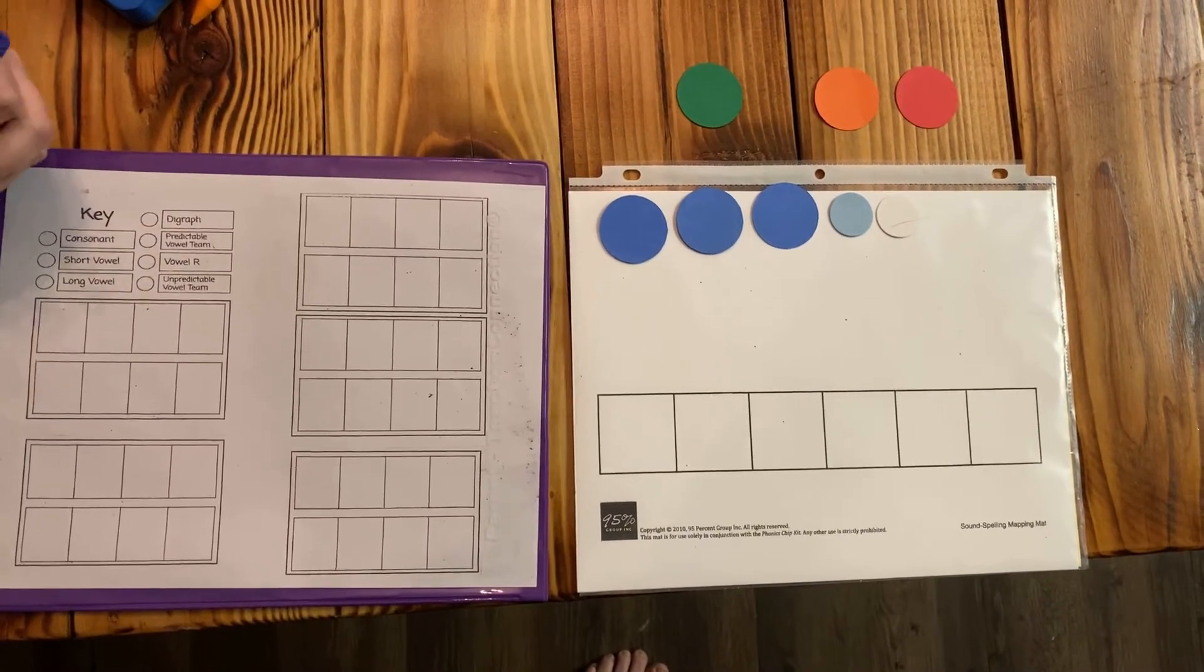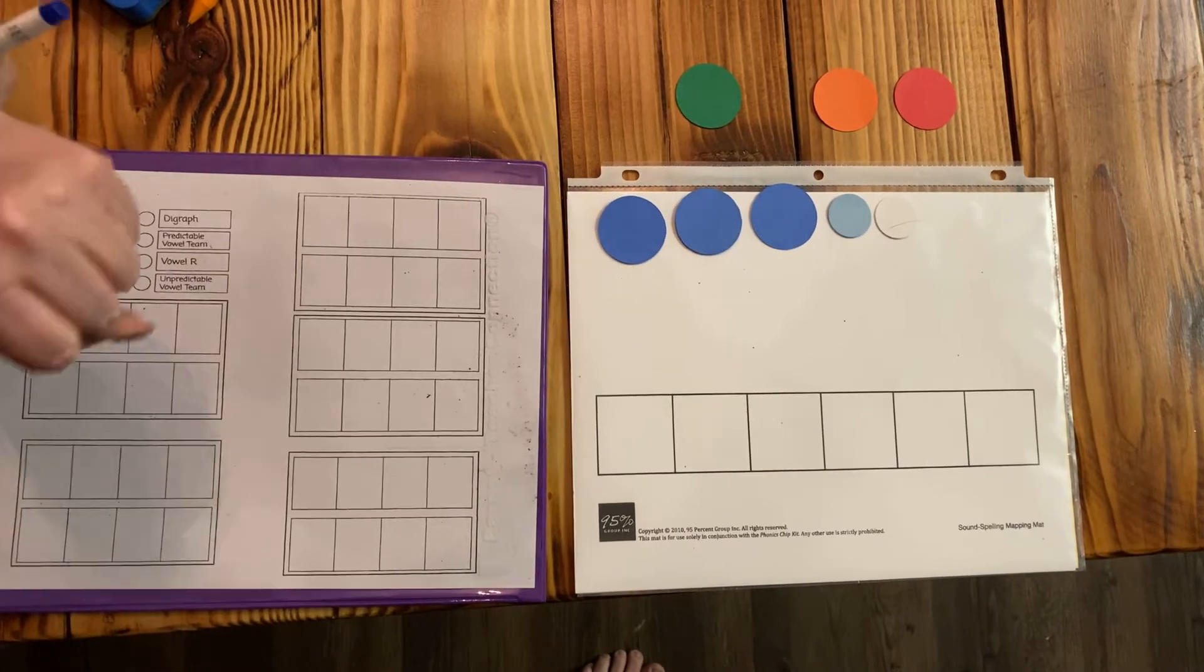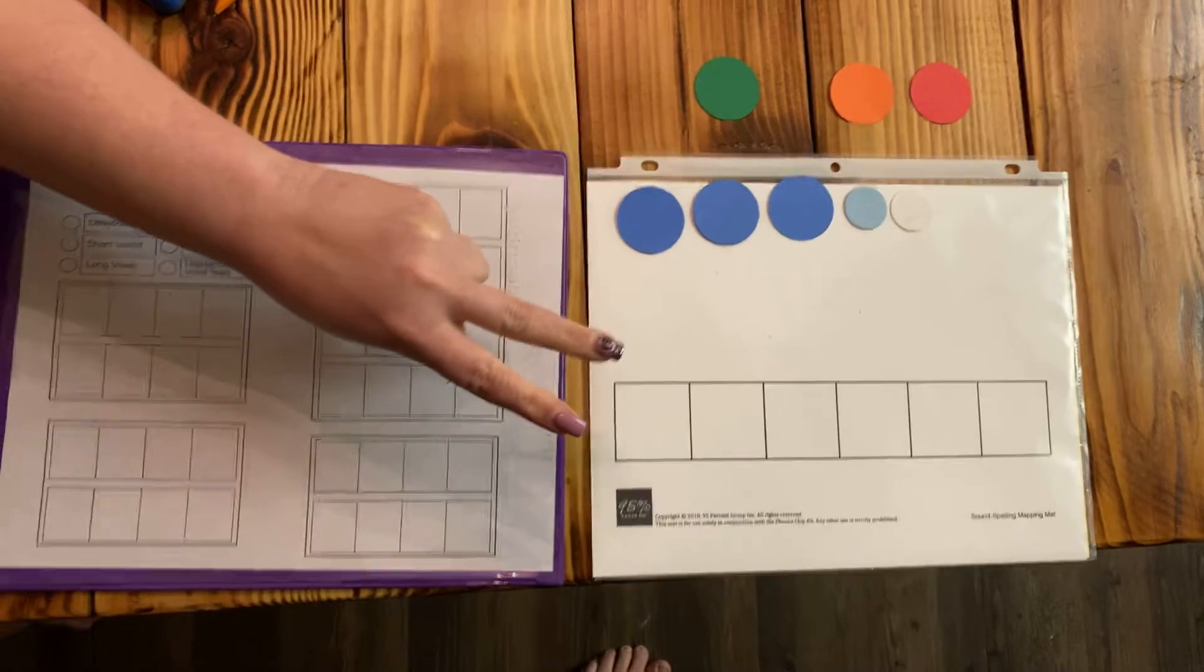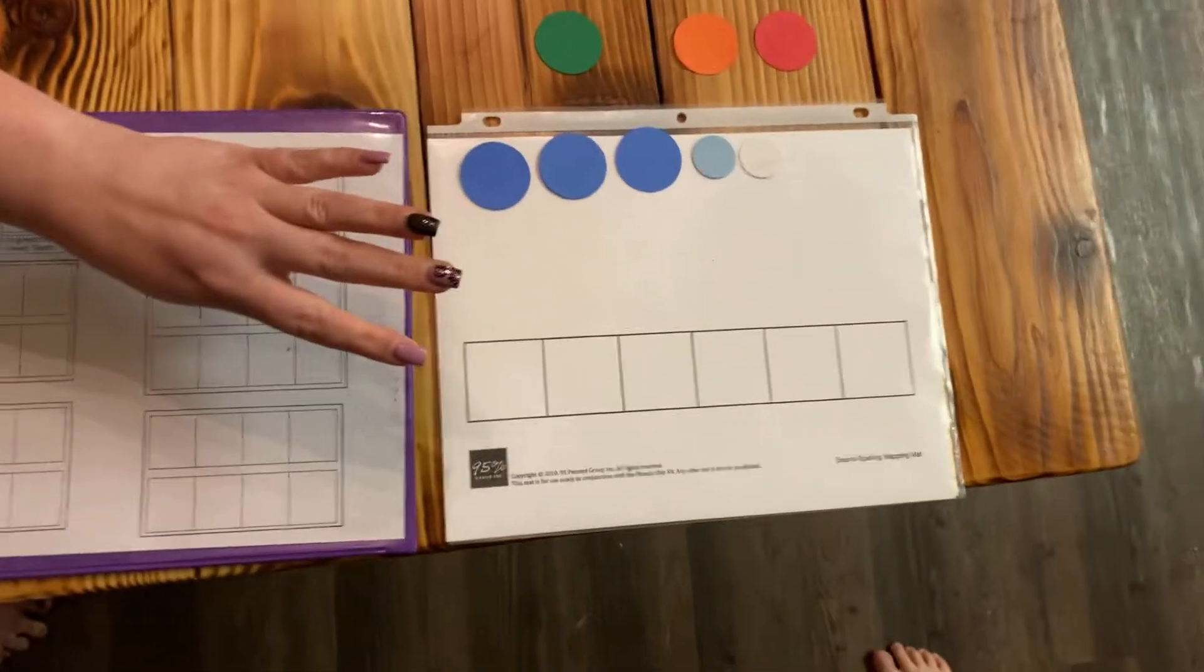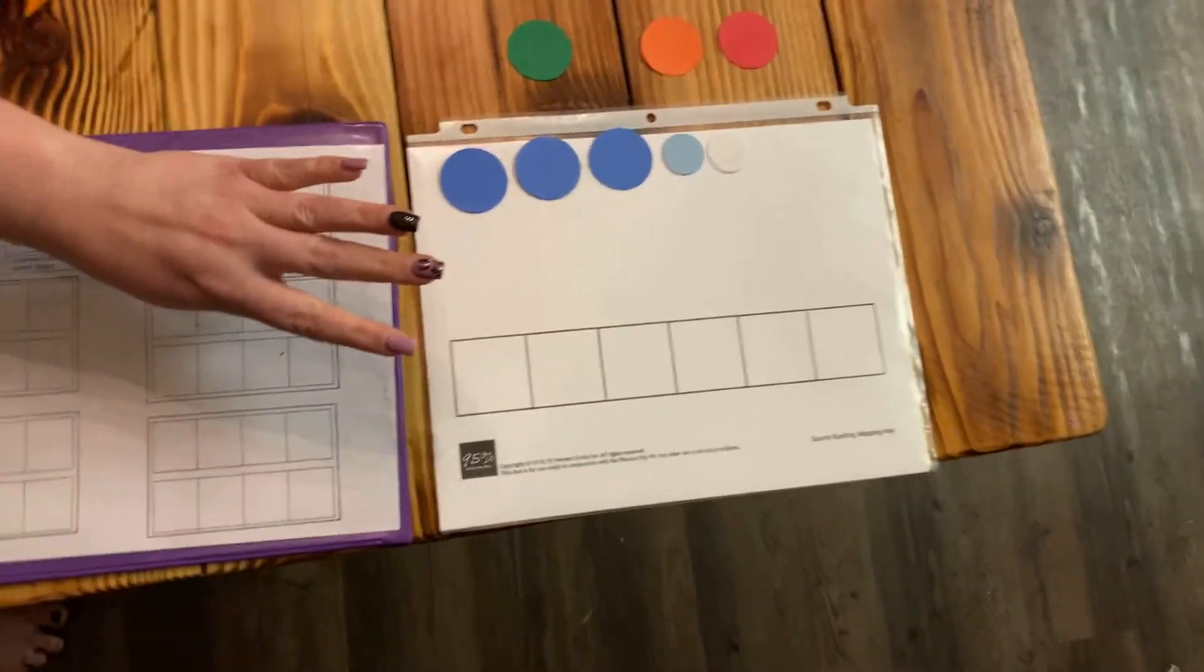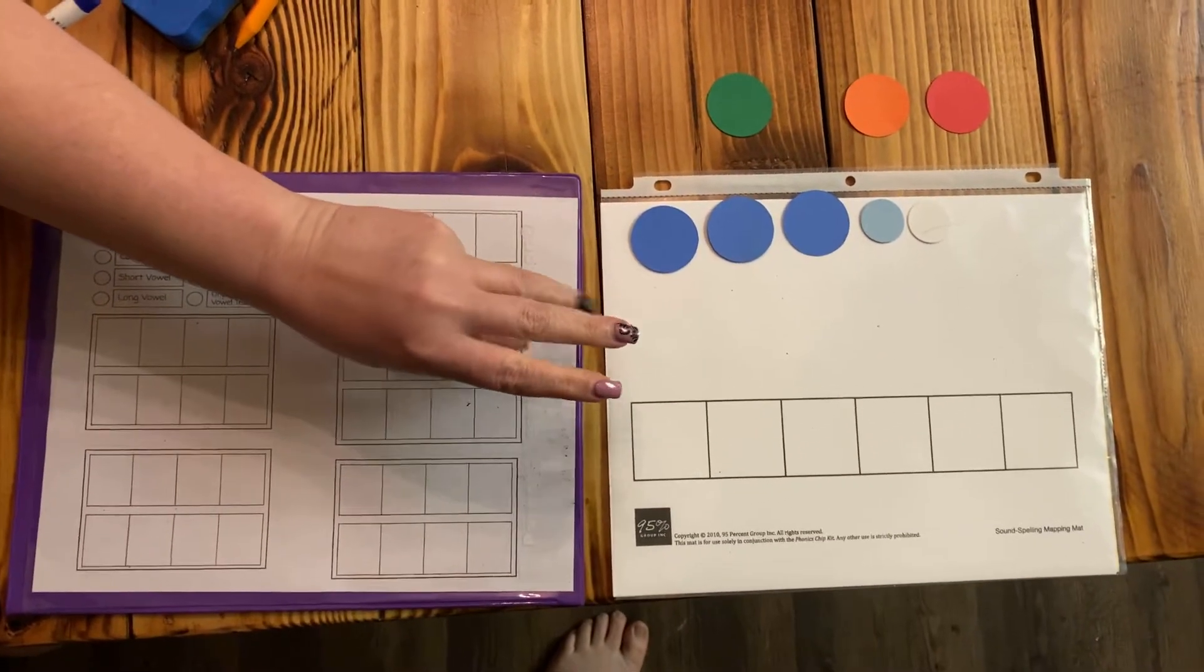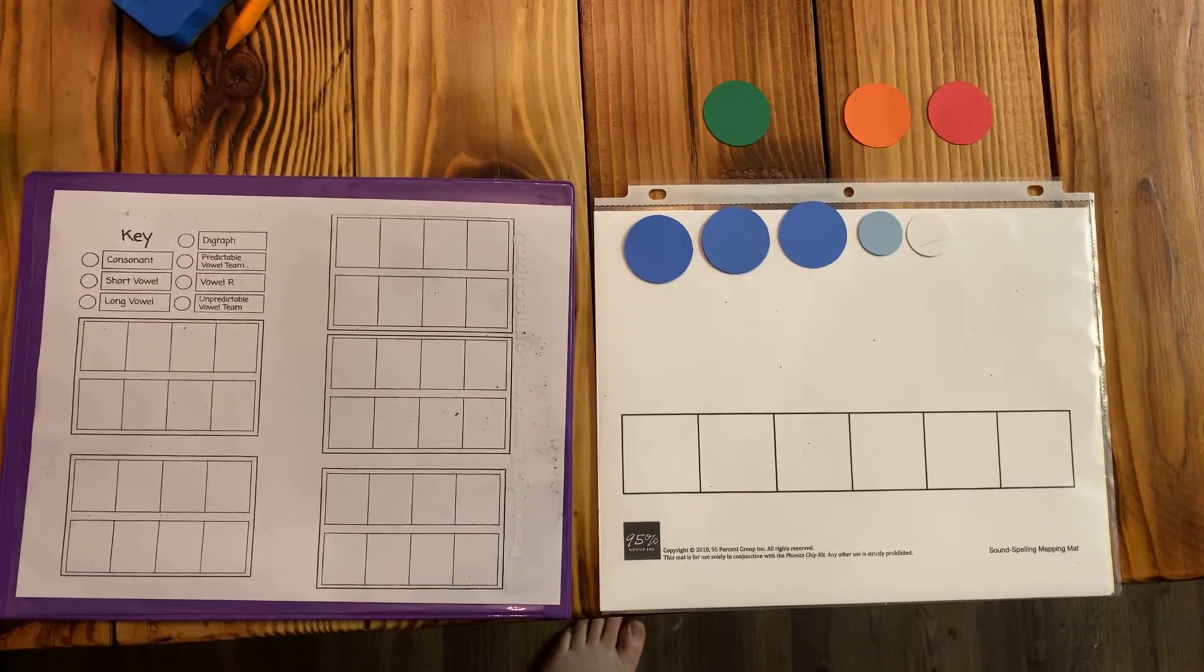So here we go friends, we're going to use some words today. First, the word is gels. Finger stretch please. Gels, four sounds. Gels: j, l, s, gels.